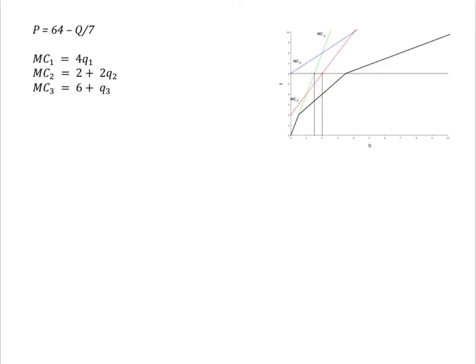The monopolist will rely on just these two plants until its marginal cost target, that is, the marginal revenue it can earn in the marketplace, rises above $6, at which point it pays to include plant three in the mix.